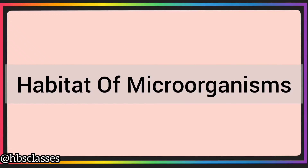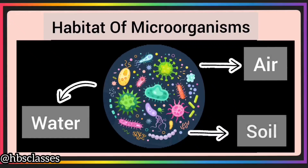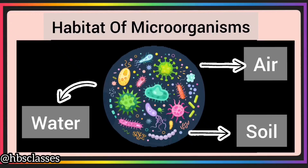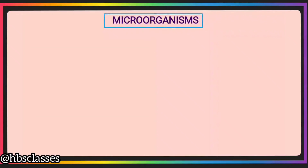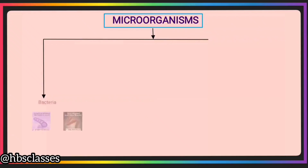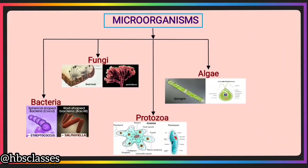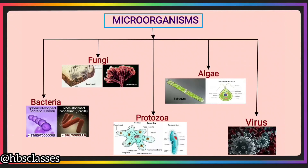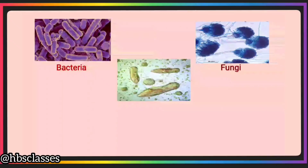Habitat of microorganisms: Microorganisms are found everywhere around us — in air, water, soil, and in the bodies of humans, animals, and plants. Classification of microorganisms: Microorganisms are classified into four major groups — bacteria, fungi, protozoa, and algae. Along with these groups, there exists a group called viruses, which are considered to be at the borderline of living and non-living. Let's know about these microorganisms.